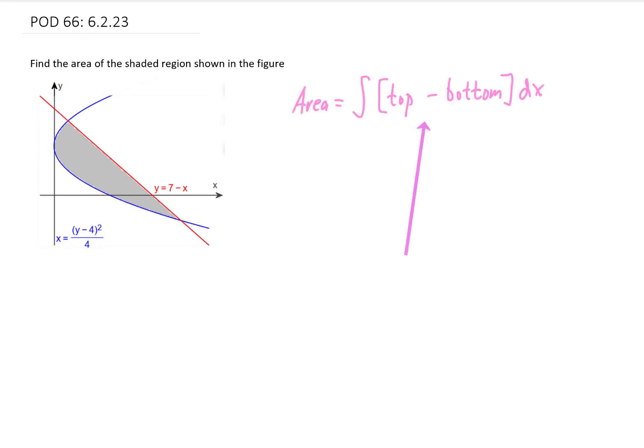We can find the area of a region by integrating the function that bounds the top of that region minus the function that bounds the bottom of that region, and integrating that with respect to x between the lowest x value and the largest x value in that region.